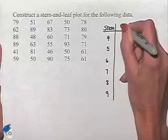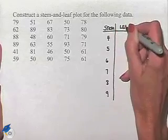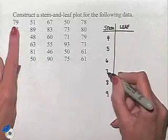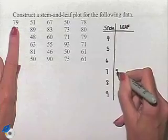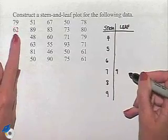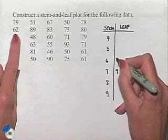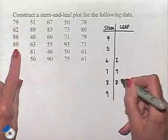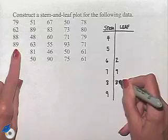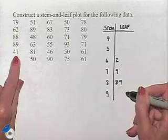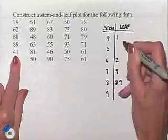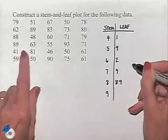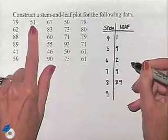And then we're going to start running through the data to add our leaves. 79 — we're going to put a 9 next to the 7. 62 — we'll put the 2. 88, 89 — moving over we put the 9. 49, 41, 59, and then on to our next column. 51.